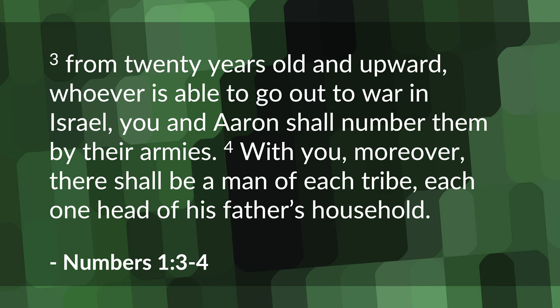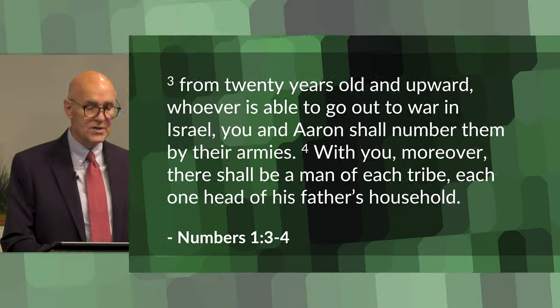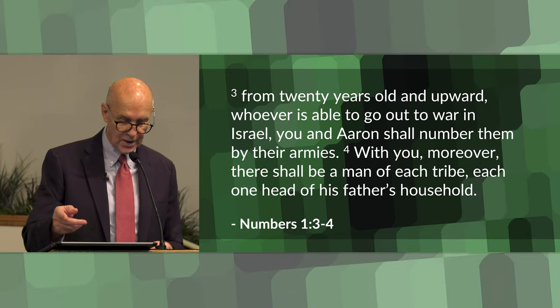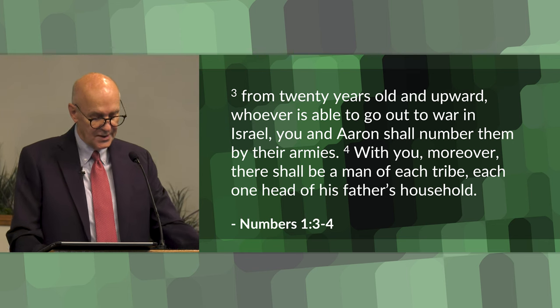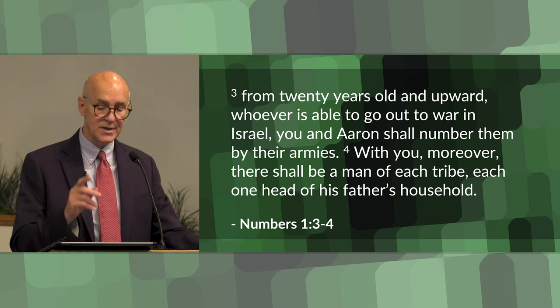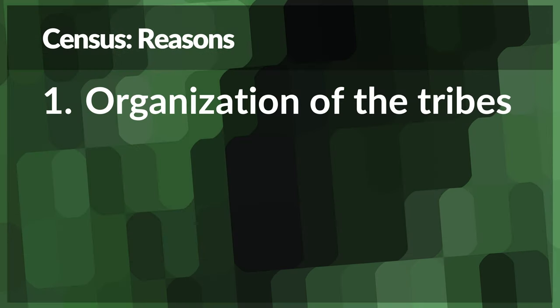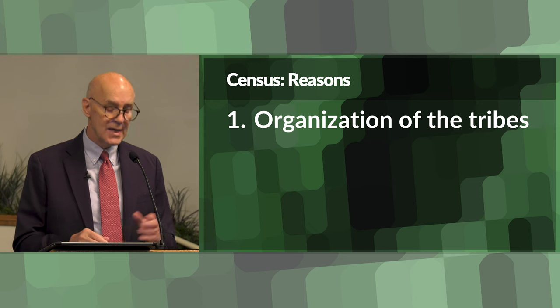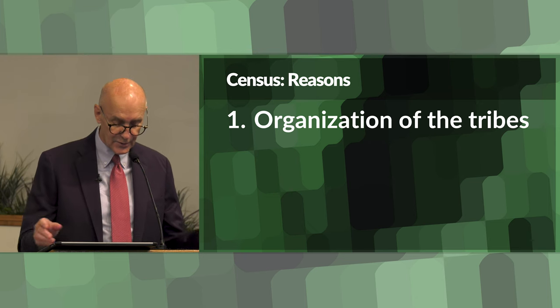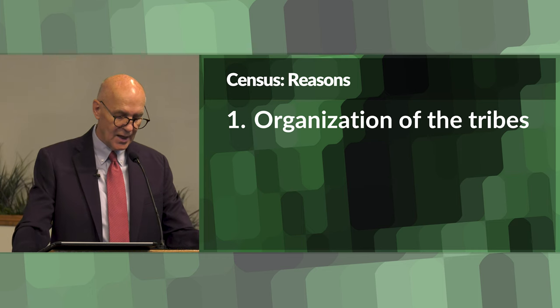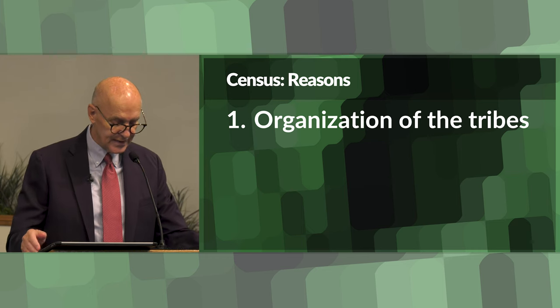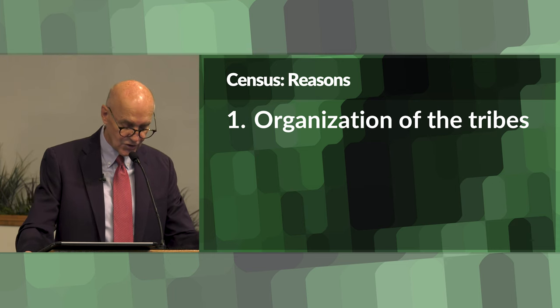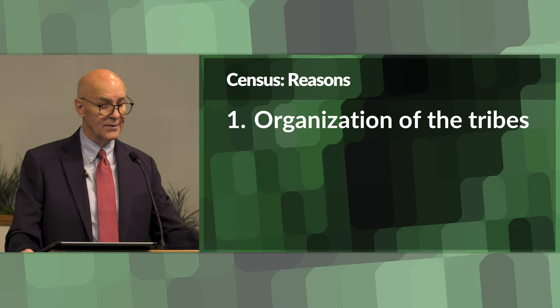'With you, moreover, there shall be a man of each tribe, each one head of his father's household.' So the first census of the Israelites, as recorded in Numbers chapter one, was conducted in a specific manner for several important reasons. First was the organization of the tribes — the census was conducted to organize the 12 tribes of Israel according to their numbers. Each tribe had its own identity and responsibilities within the community, and knowing the population of each tribe was crucial for assigning roles and territories as they journeyed through the wilderness and eventually settled in the promised land.